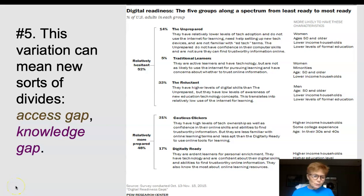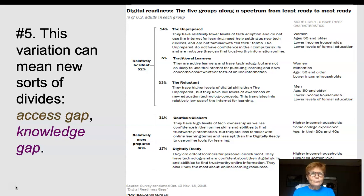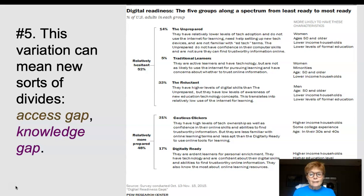Hi and welcome to part two of Critically Thinking About Technology, our first module for FSOS 3105. When we left off with part one, we were at technology truth number five, which is that variation in our technology use can mean all sorts of divides — an access gap and a knowledge gap as examples.